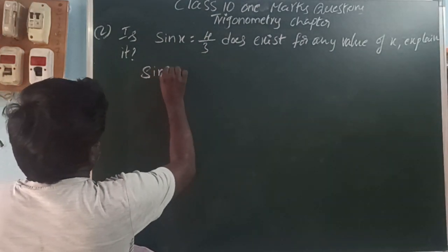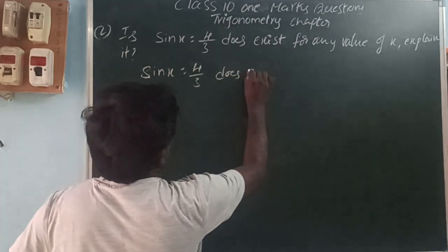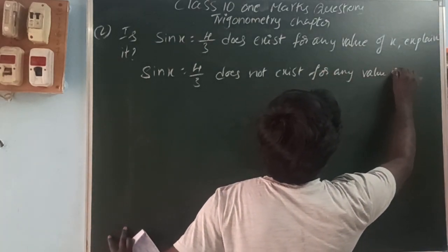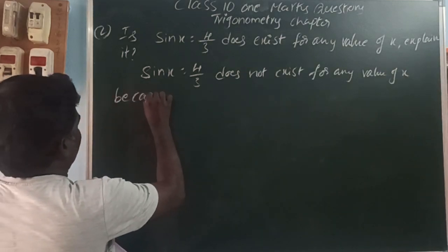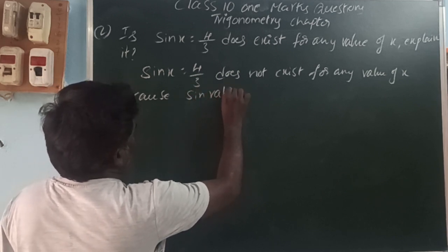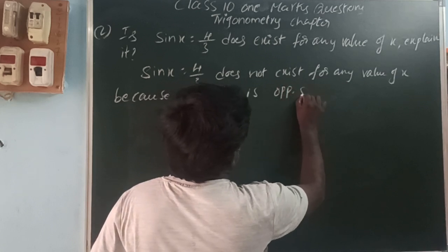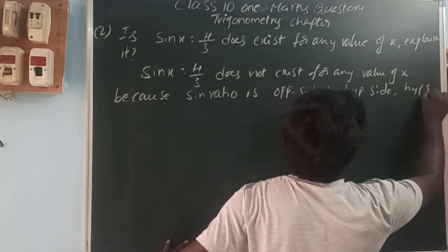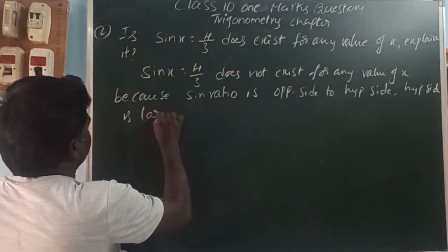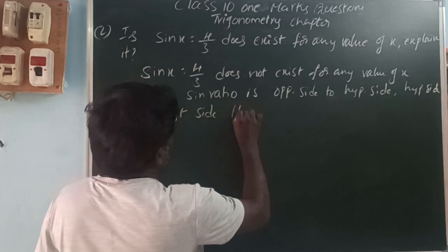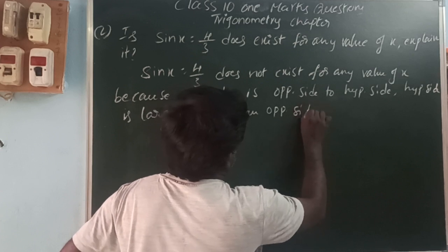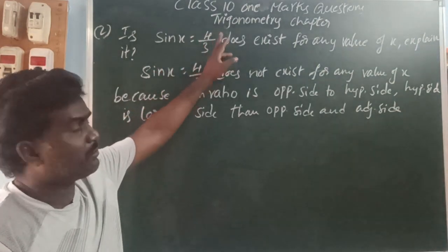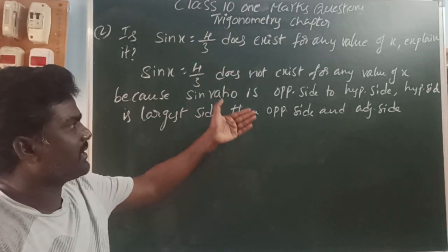Sin x equals 4 by 3 does not exist for any value of x, because the sine ratio is opposite side to hypotenuse side. The hypotenuse side is the largest side — larger than the opposite side and adjacent side. Here sin x equals 4 by 3 means opposite is 4 and hypotenuse is 3, but the hypotenuse must be larger. That is why it does not exist for any value of x.